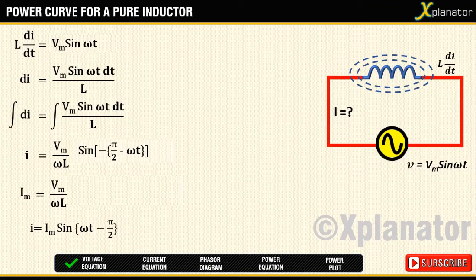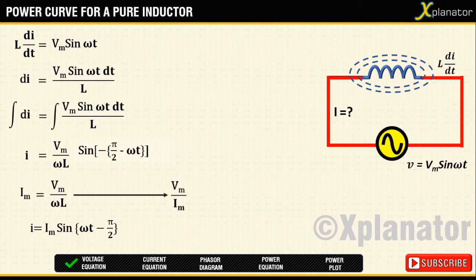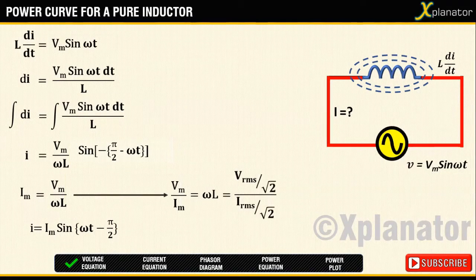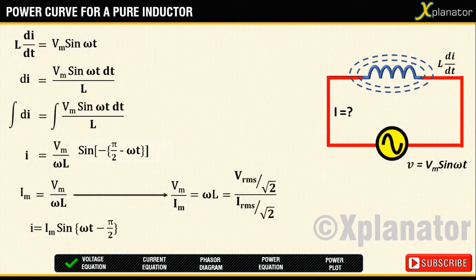Going back to the equation of Im, if the terms are rearranged to get a ratio Vm by Im, it will equal to ωL. And it remains the same even when the ratio Vrms by Irms is considered.